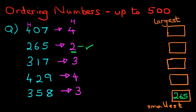Now let's look at the next number, which is the largest — and that is the three. But we've got two threes over here. And because we've got two threes, they're the same, so we cannot tell which is larger and which is smaller. What we have to do is look at the digit next to it — in this case the tens. So let's look at the tens for the three hundreds. Three hundred and seventeen has one ten, and three hundred and fifty-eight has five tens.